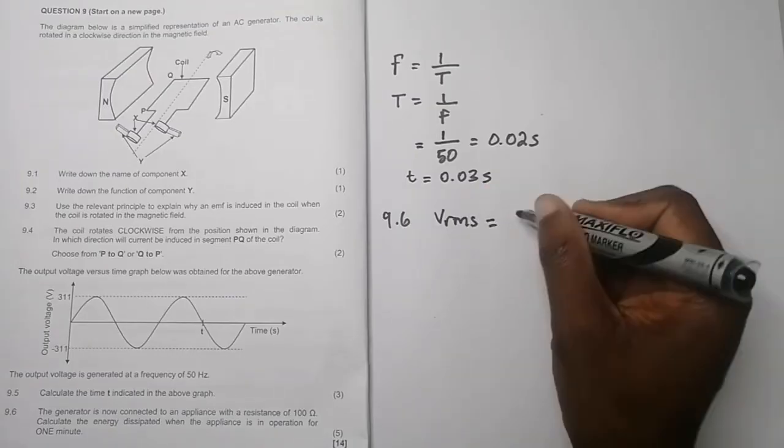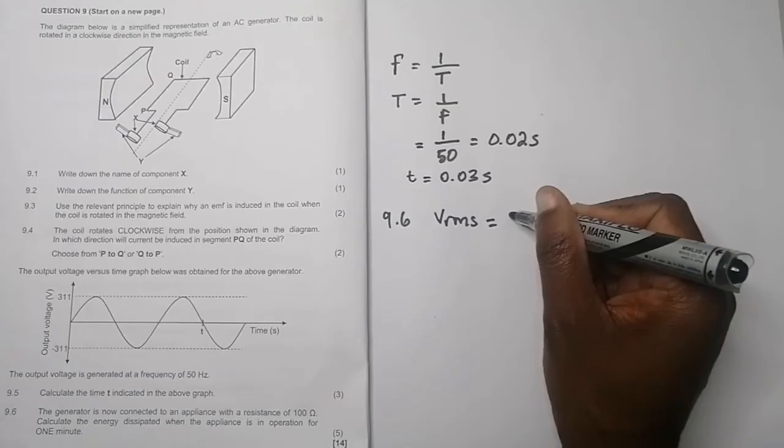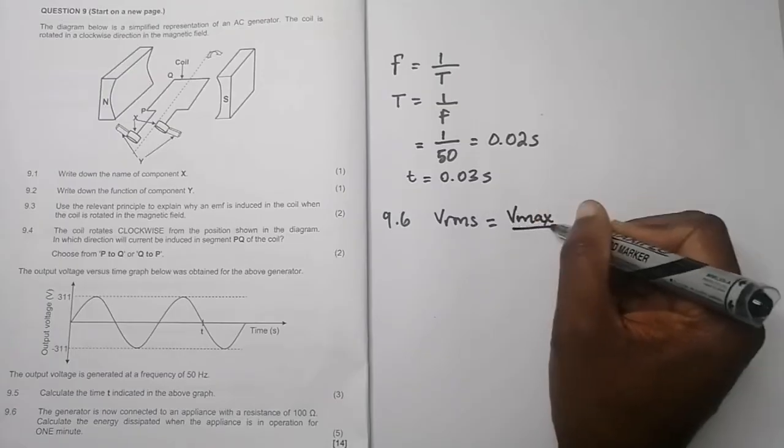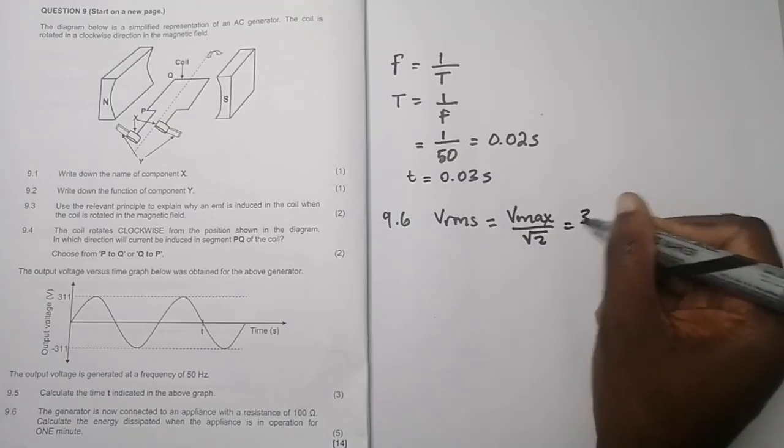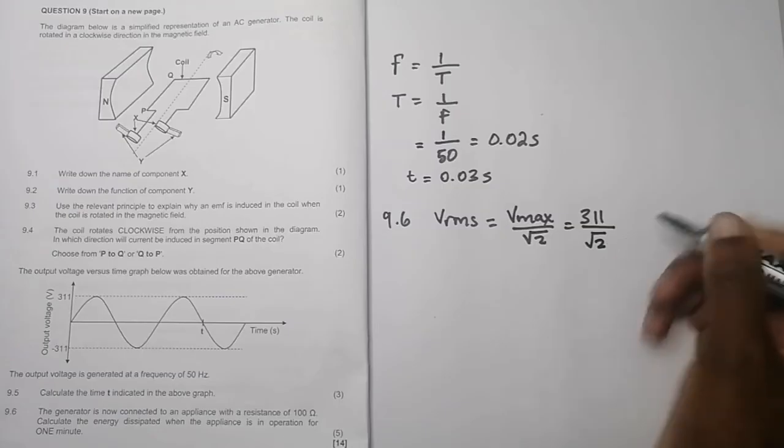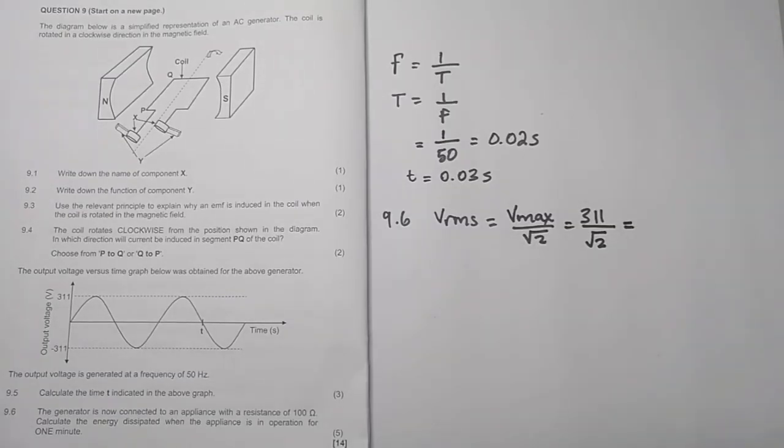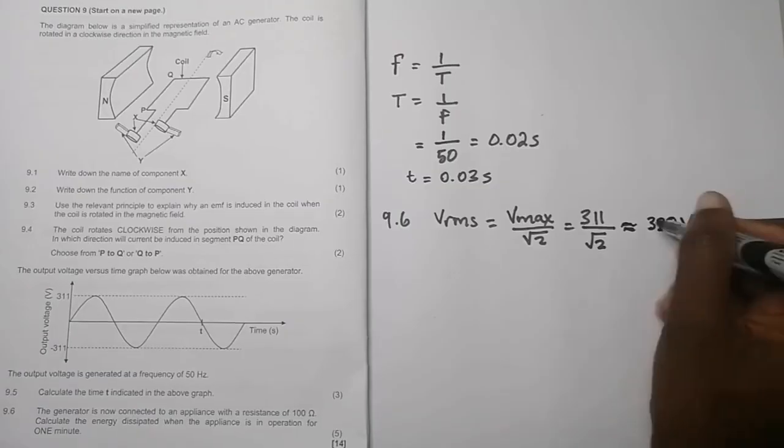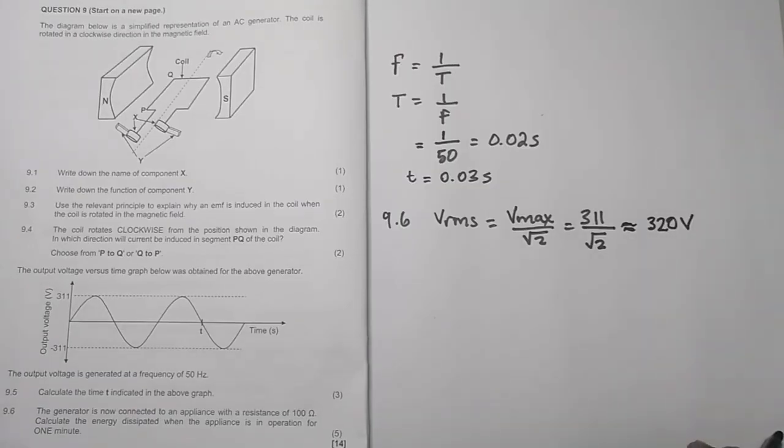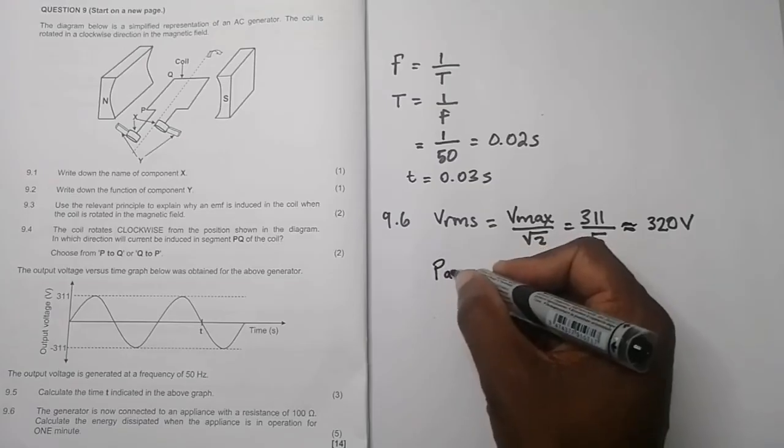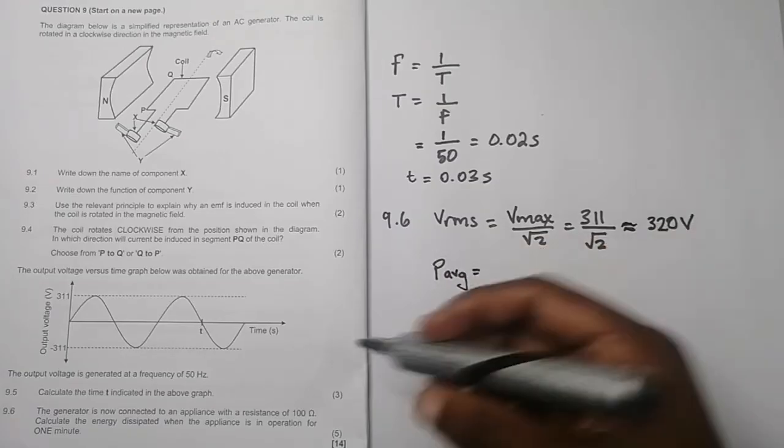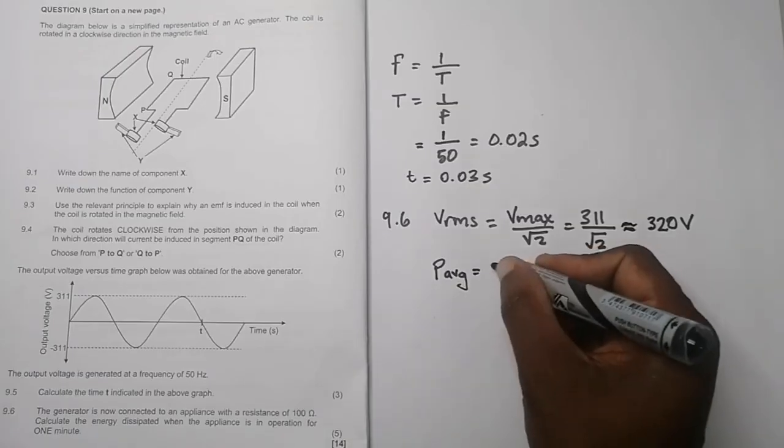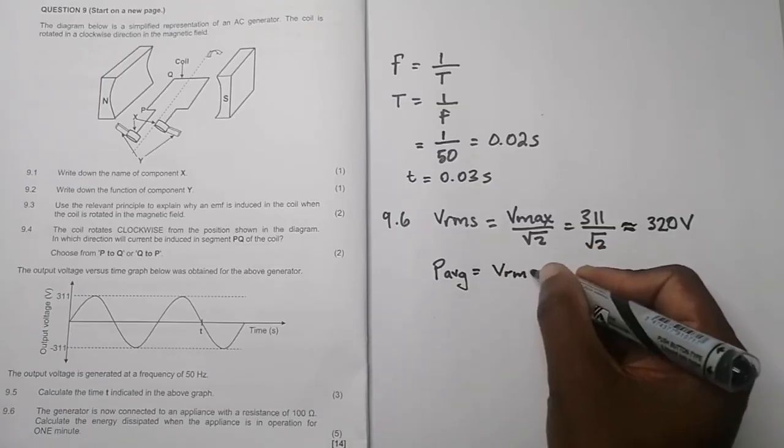So we will say this is V max divided by square root of two, so that's 311 divided by root 2, and we get a value of about, so that's approximately 320 volts. So that's the value that we get there. Now we want to find out the power, the average power. What do we have? We've got the voltage and we've got the resistance that was given there, so I'm going to say it's V rms squared divided by the resistance.